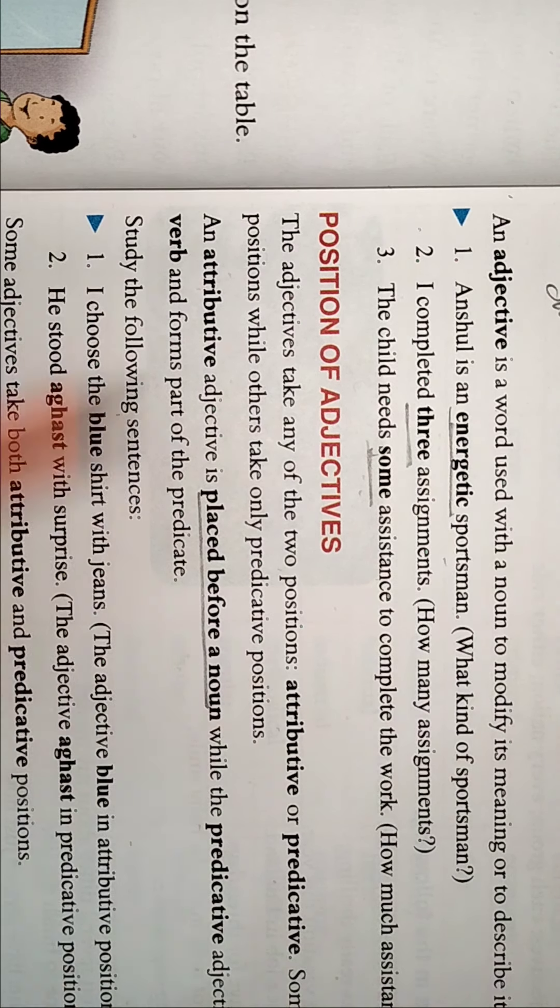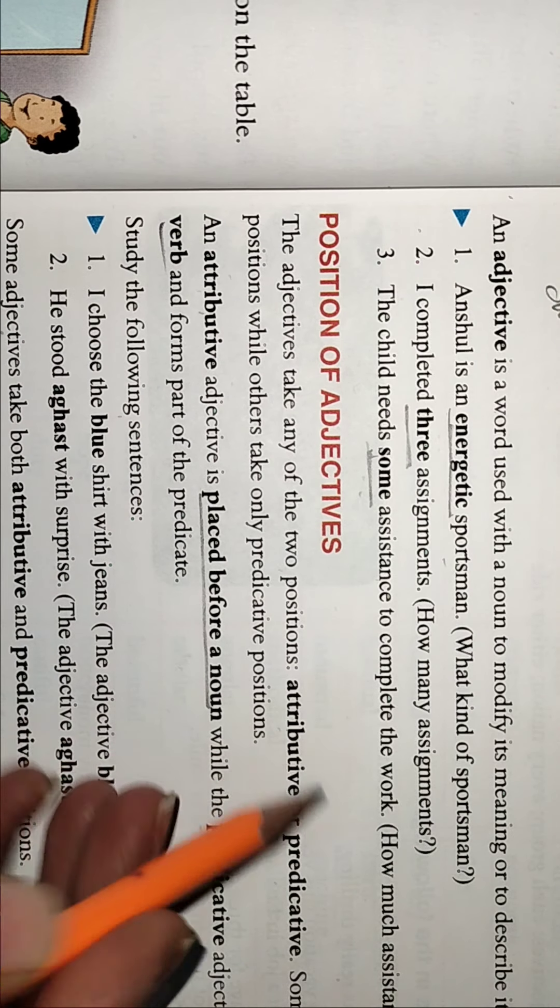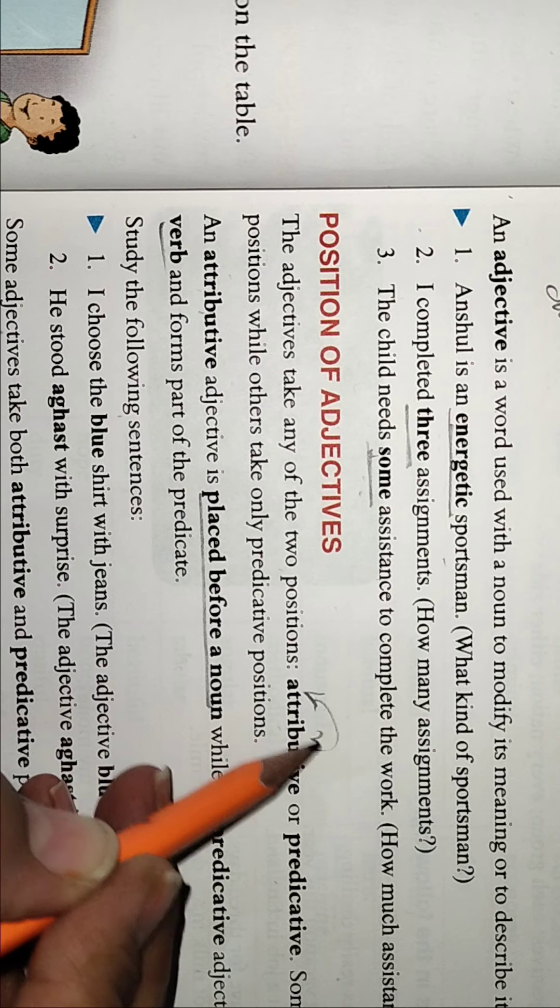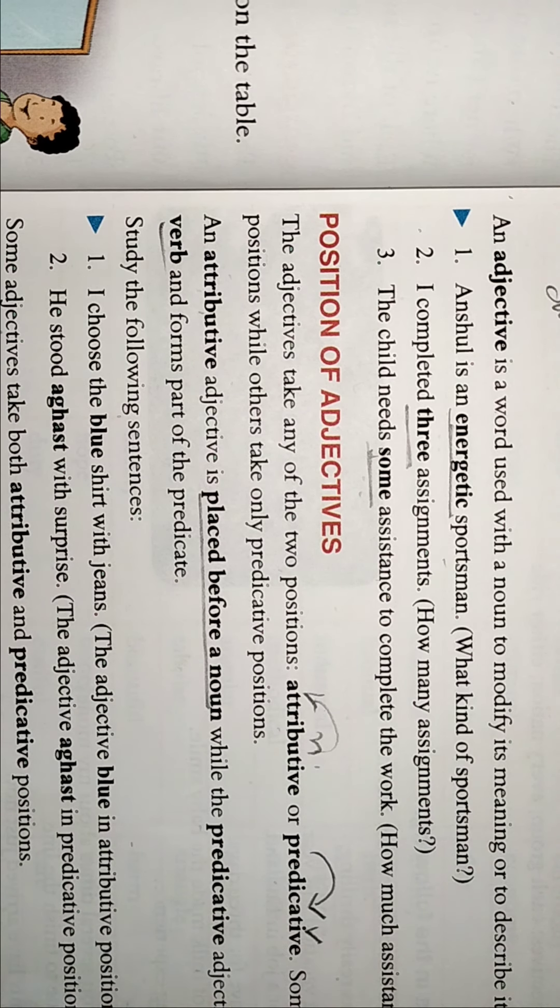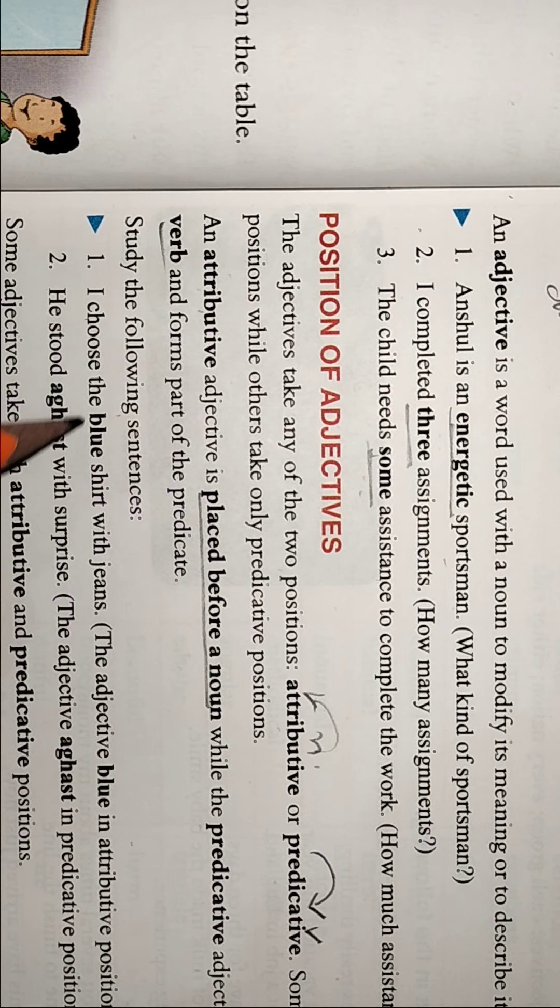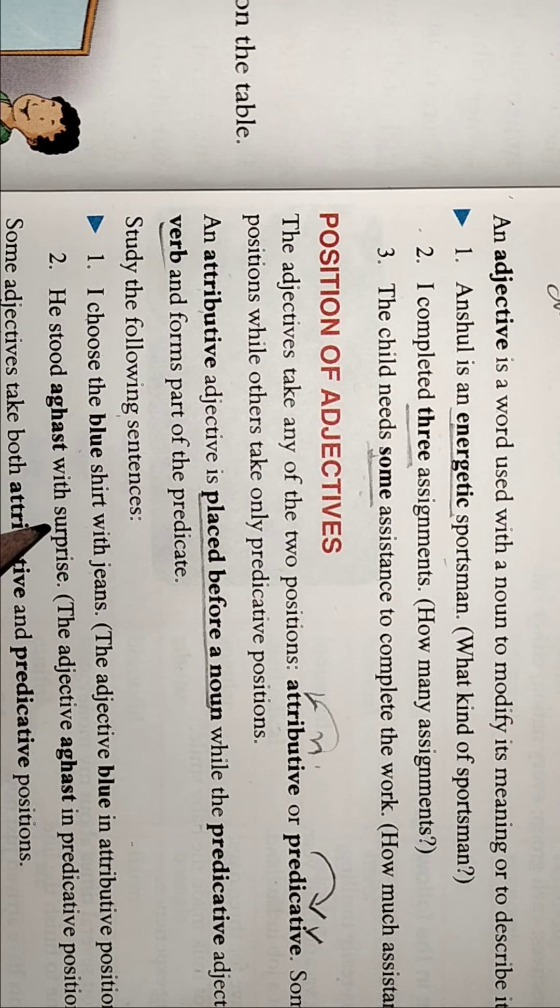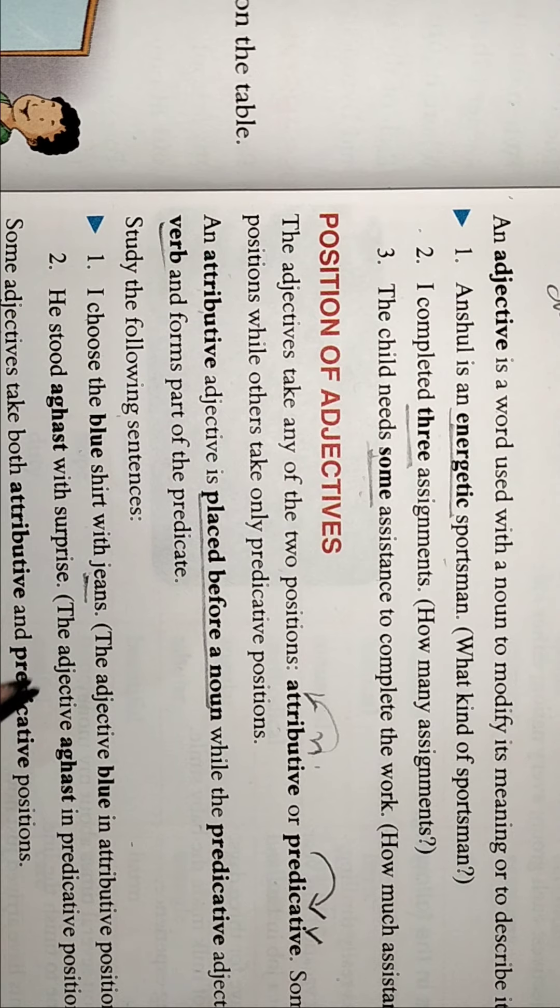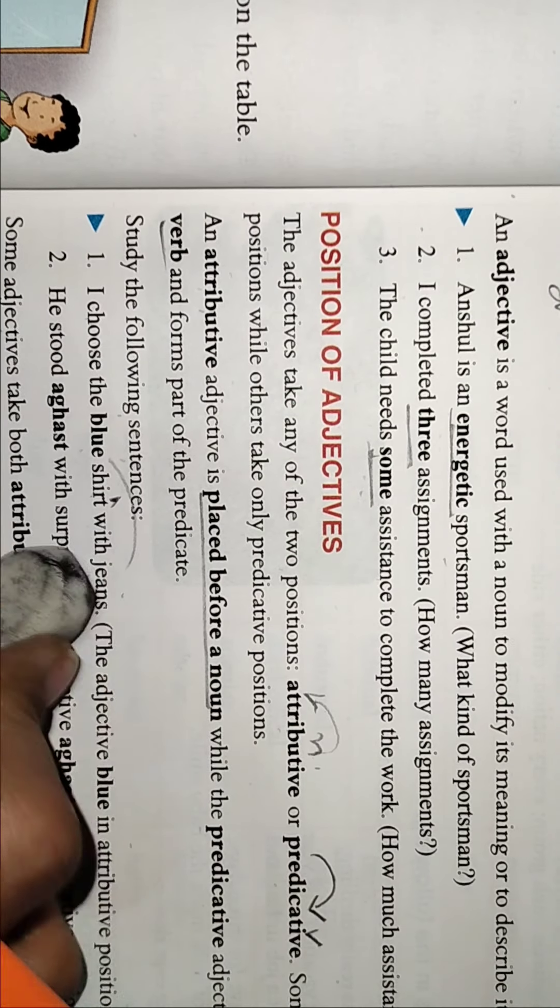Attributive adjective is placed before noun, and predicative adjective is placed after the verb. So this is the difference - attributive before noun and predicative after verb. Clear? So study the following: I choose the blue shirt with jeans. Now what is the noun in it?